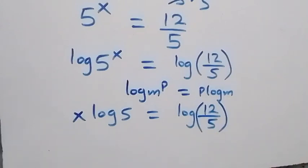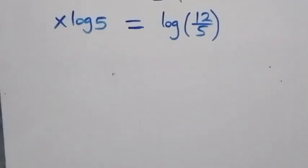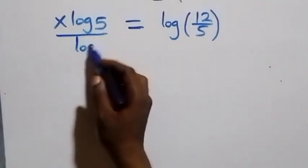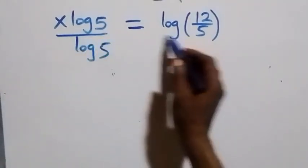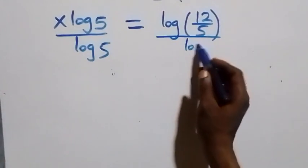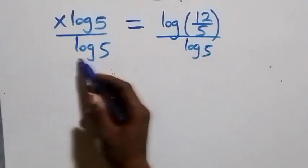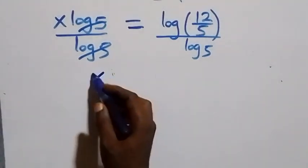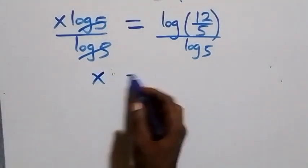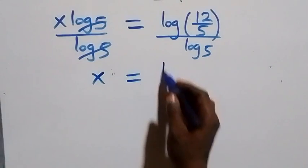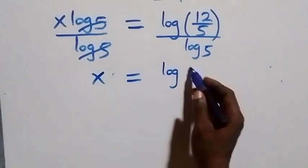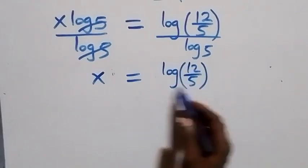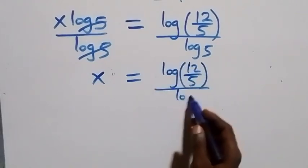From here we divide both sides by log 5. Log 5 cancels on the left and we have x left, which equals log(12/5) over log 5.